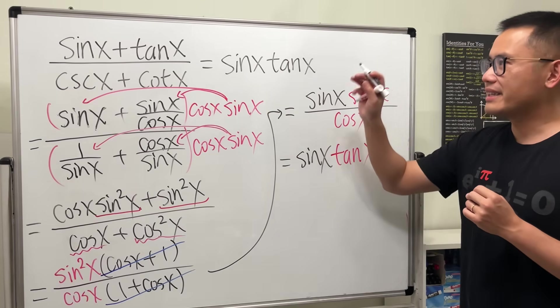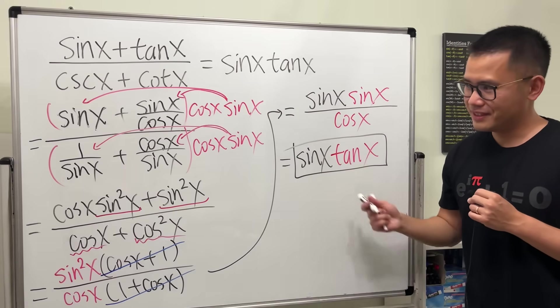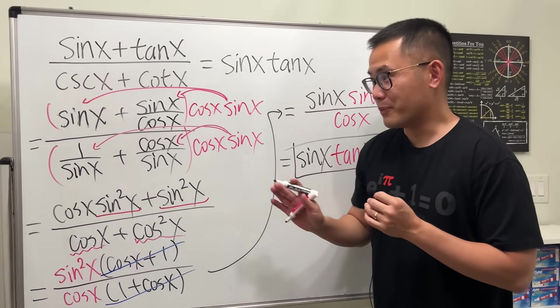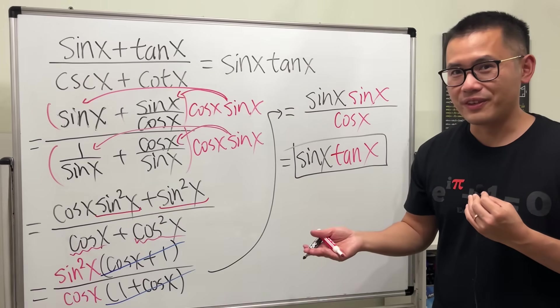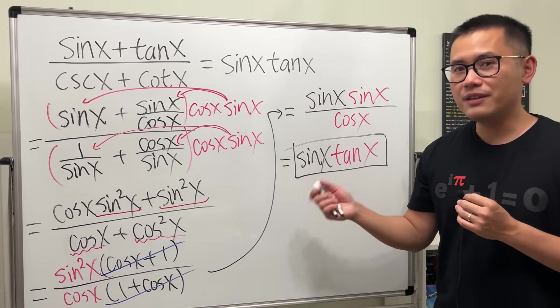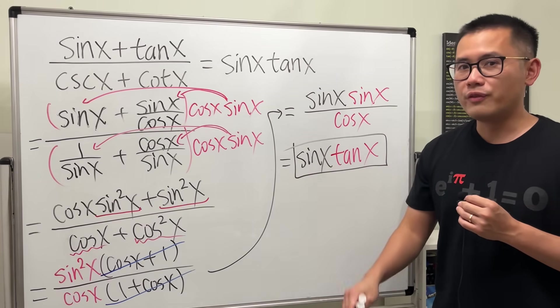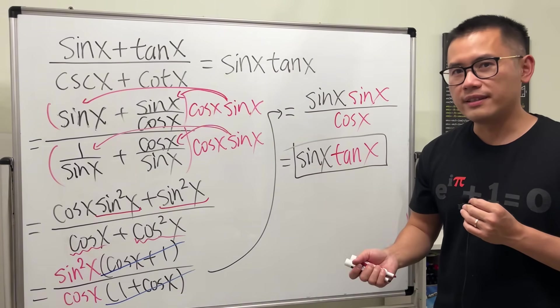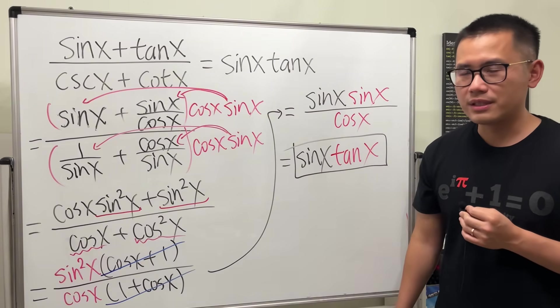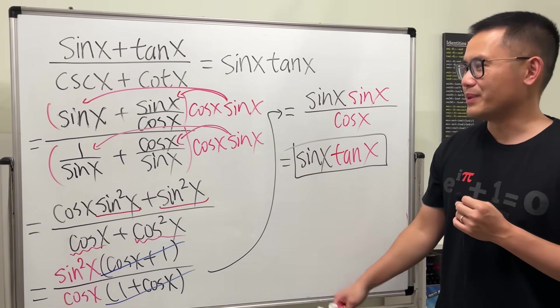And that is exactly what we have on the right-hand side, so we are done. This kind of question is pretty difficult, especially if you're doing it for the first time. Of course, the more you practice, the better. I have another video where I show you 24 trig identity questions you should know. I'll link it in the description so you can get more practice. Hopefully this helps you. Let me know how it goes. That's it.